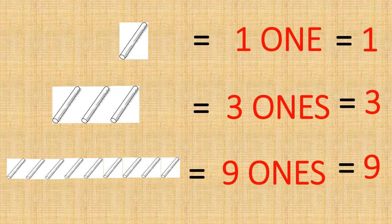So children, always remember: numbers from one to nine are called single digit numbers.